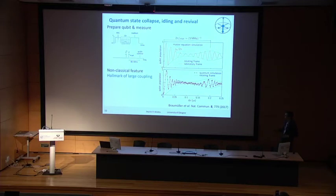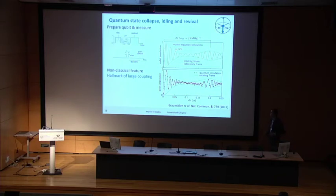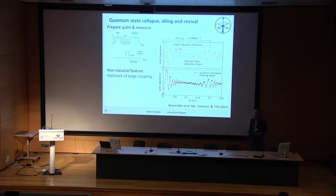You see these fast oscillations where the average qubit population approaches 0.5 on short timescales, and then larger oscillations emerge. This state collapse, idling, and revival is a hallmark of large coupling in the ultra-strong coupling regime.